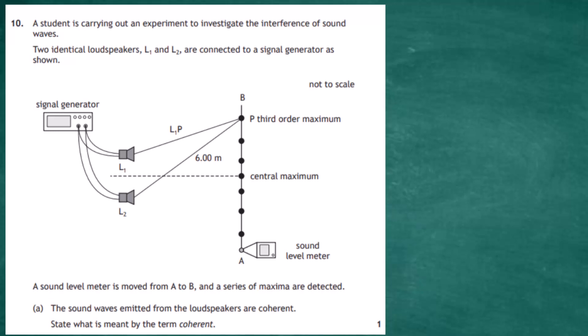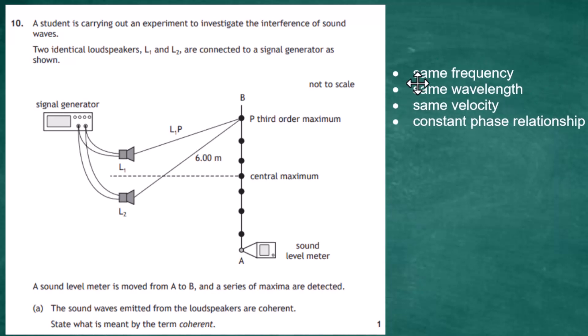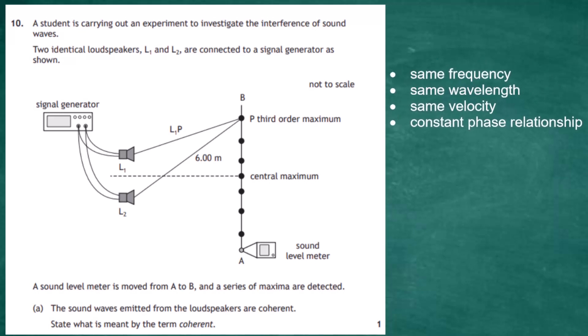A sound level meter is moved from A to B and a series of maxima and minima are detected. For one mark, we're asked: the sound waves emitted from the loudspeakers are coherent — explain what is meant by the term coherent. For two waves to be coherent, they must have the same frequency, the same wavelength, the same velocity, and — the most difficult condition — a constant phase relationship.